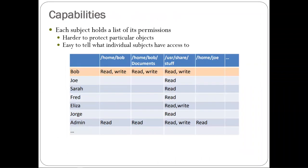The other way to store this is with capabilities. You identify the subject and attach all the permissions that subject has on your system to that subject. When a subject does something on the system, the reference monitor looks up that user and checks if that action is allowed on their capability list. This has the flip set of trade-offs: it's harder to figure out who has access to a particular object, but it's easy to tell what an individual subject has access to. If you want to delete a user, just delete the capability — that row — and you're done.